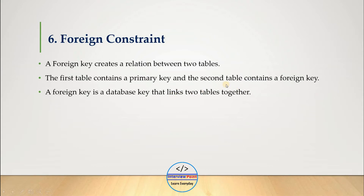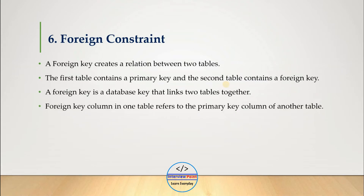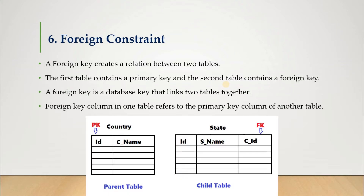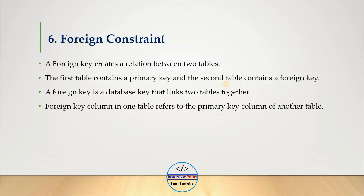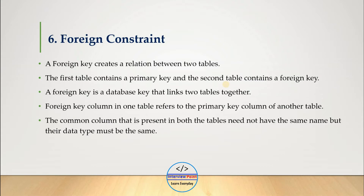A foreign key is a database key that links two tables together. The foreign key column in one table refers to the primary key column of another table — the parent table must have the primary key, and that column is used as the foreign key in the child table. The common column present in both tables does not need to have the same name, but the data type must be the same.